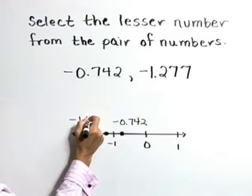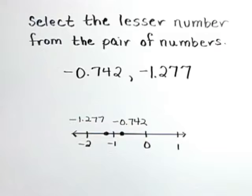Because this value lies to the left on the number line, negative 1.277 is the lesser value.